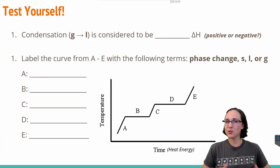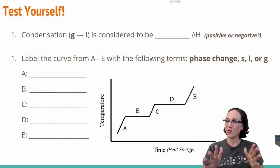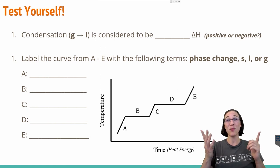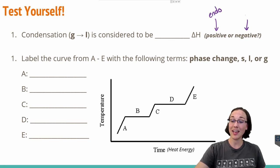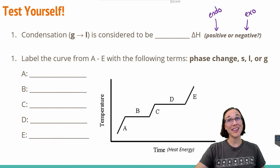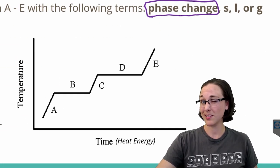Make sure you can fill in the blanks for these practice questions. Remember that positive delta H is an endothermic process, and negative delta H is an exothermic process. And for the second question, of course you can use 'phase change' more than once.